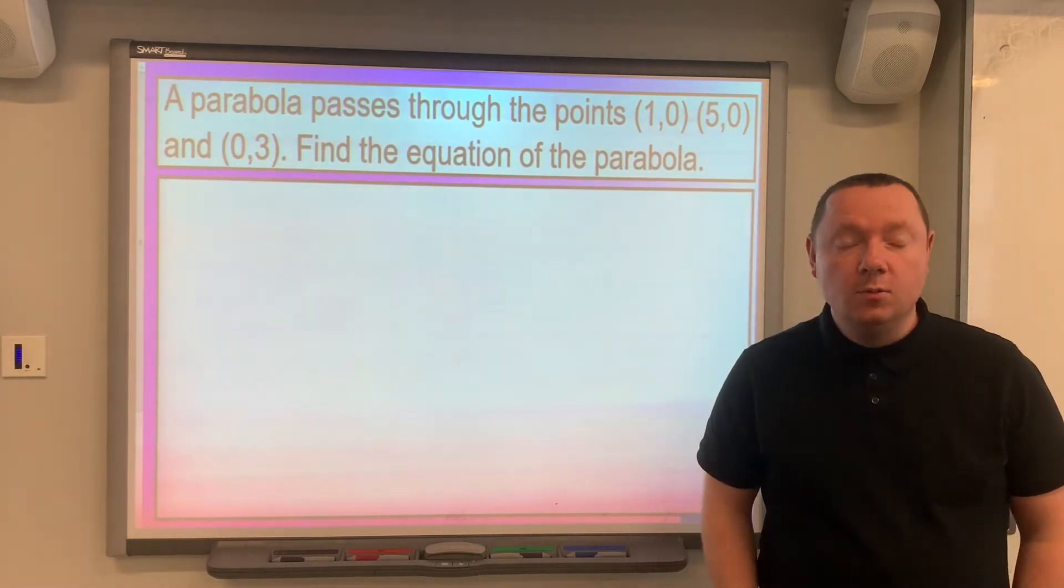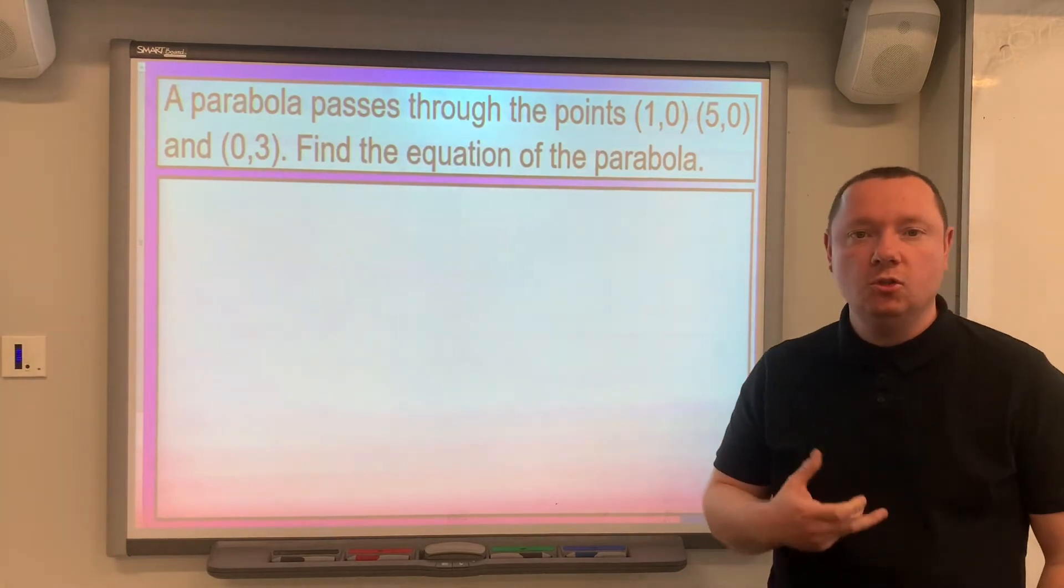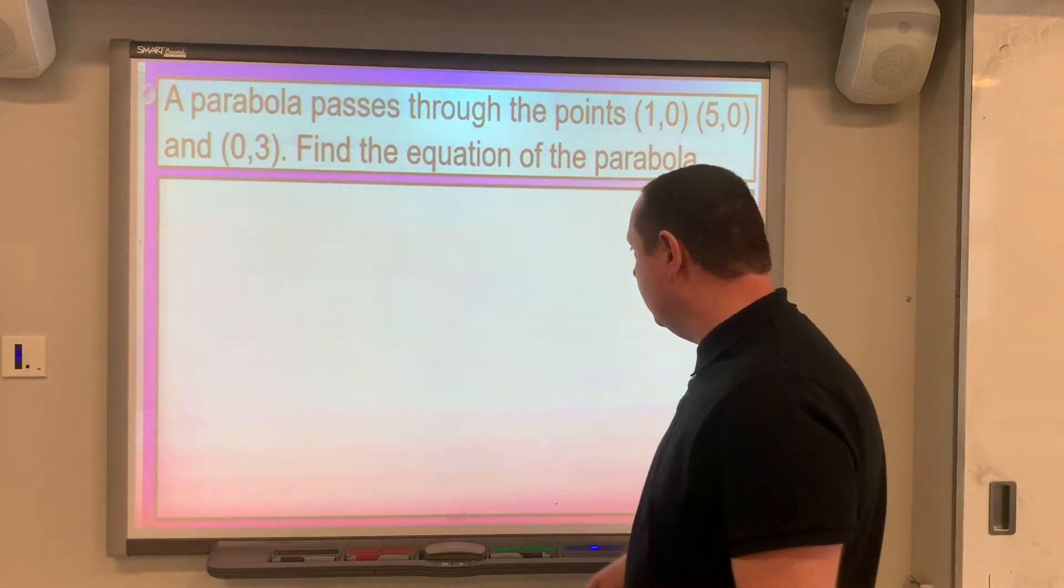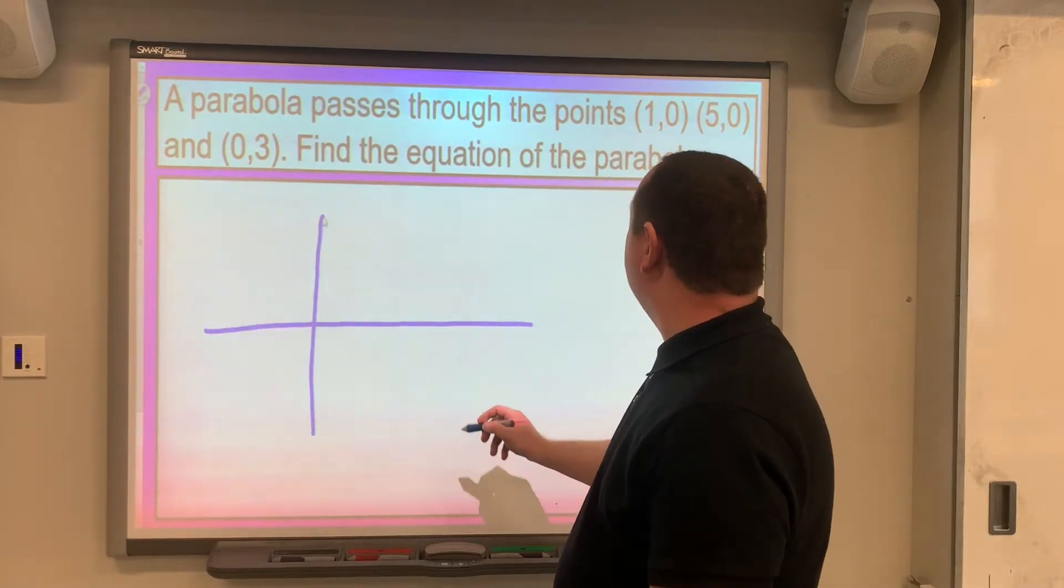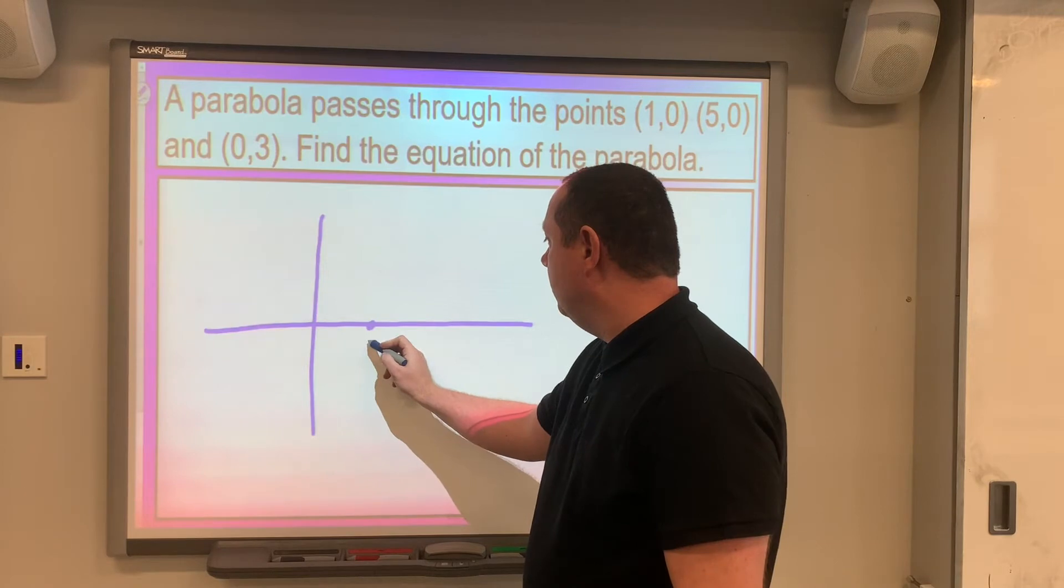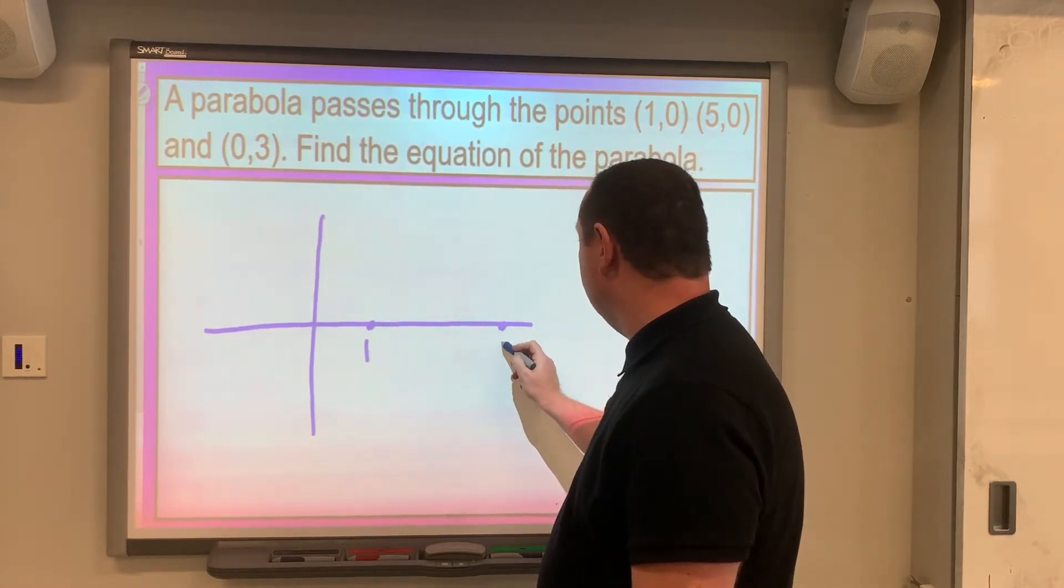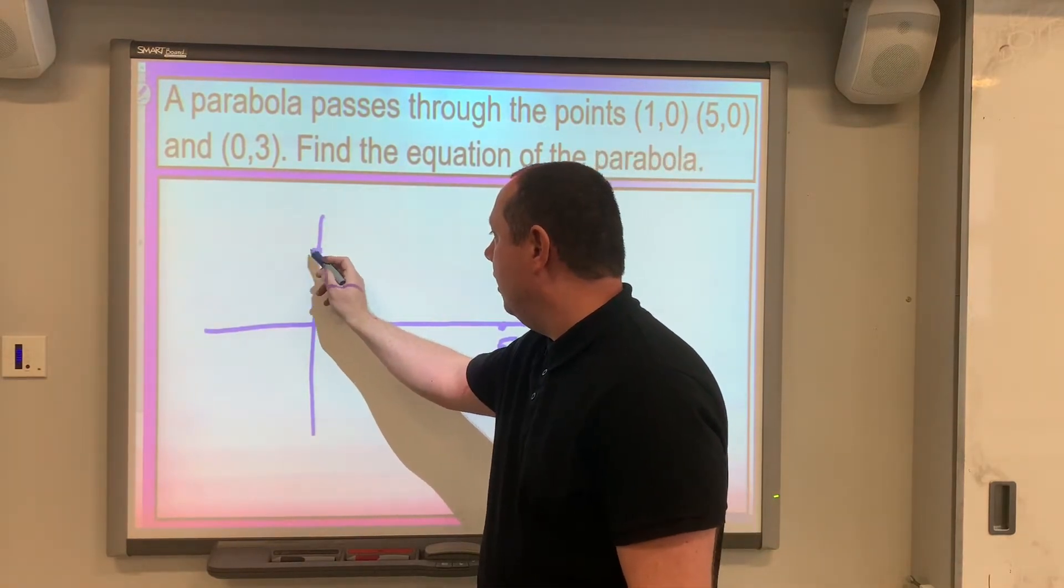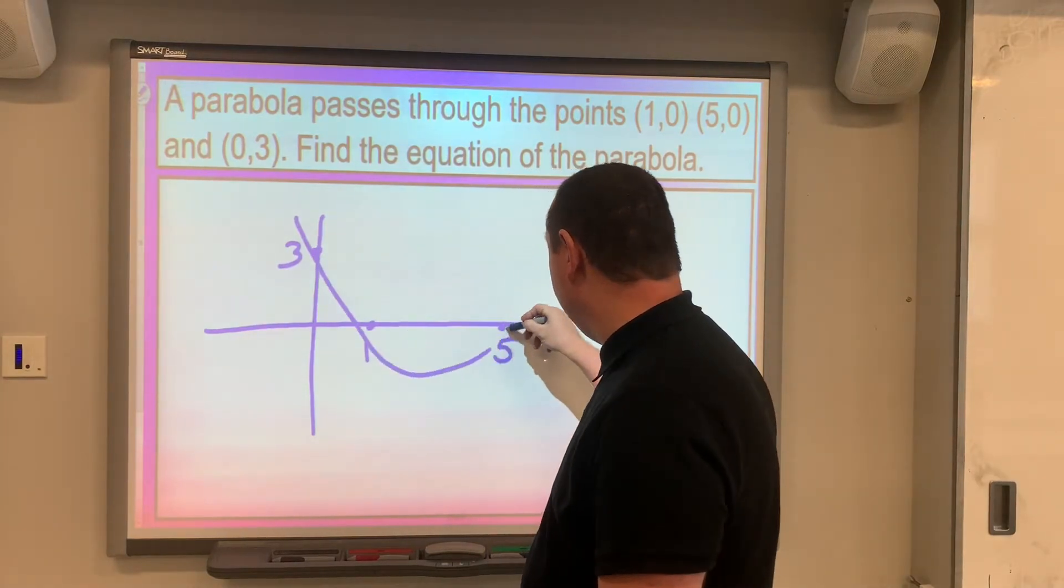Step one will always be the same - we'll try and draw a little sketch of the parabola if it's not given to us. So if I draw a simple sketch, we have along one up zero, we have along five up zero, so those are our roots. And the extra point it's given us is along zero up three, so our parabola maybe looks something like this.